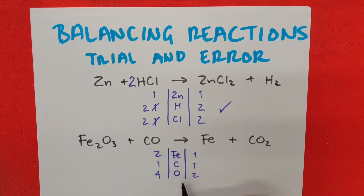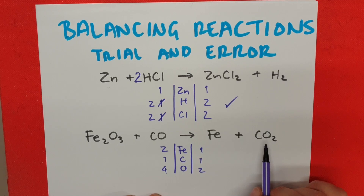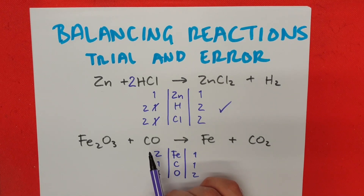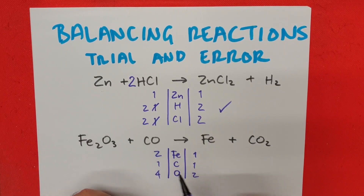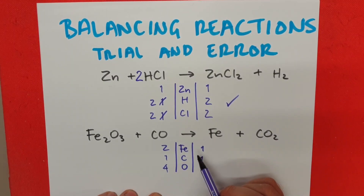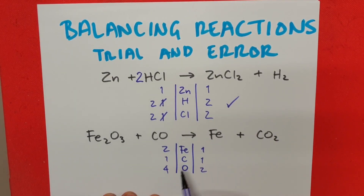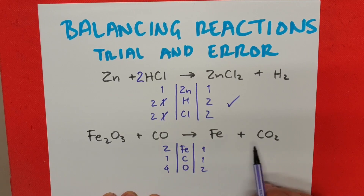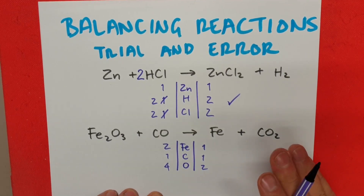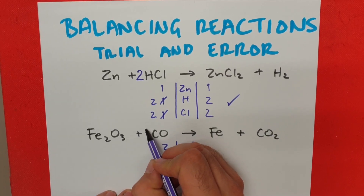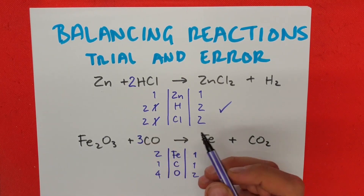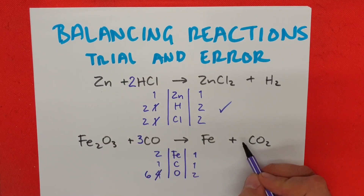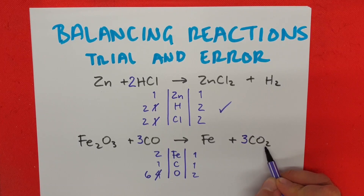Once we've completed our little inventory — two, one, four, one, one, two — we realize there are four oxygen on one side and two oxygen on the other. So let's try a hunch: I'm going to add a three over here. That way, three oxygen plus three oxygen gives me six. That allows me to add a number three on the other side, and my oxygen will be balanced.